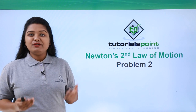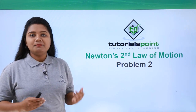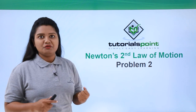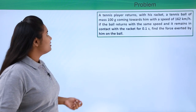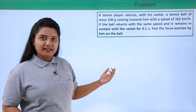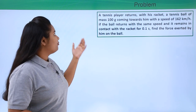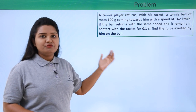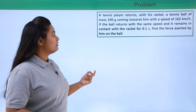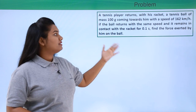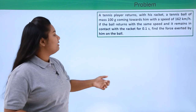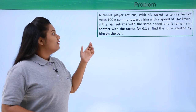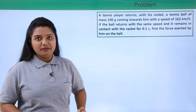Hello everyone. In this video we are going to solve another problem based on Newton's second law of motion. The problem reads: a tennis player returns with his racket a tennis ball of mass 100 grams coming towards him with a speed of 162 kilometers per hour. If the ball returns with the same speed and it remains in contact with the racket for 0.1 seconds, find the force exerted by him on the ball.